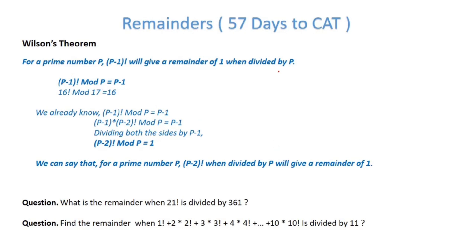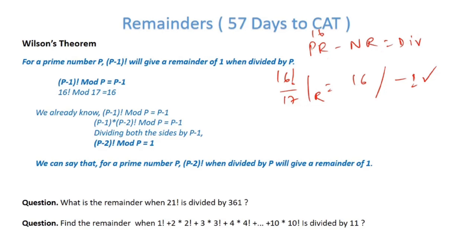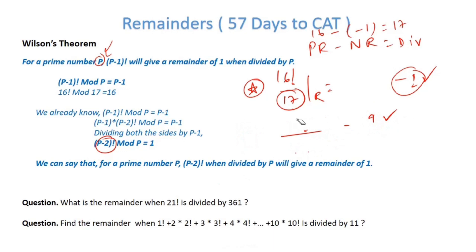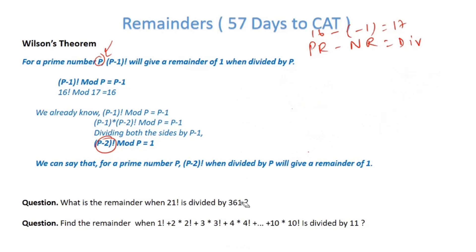Wilson's theorem states: (p − 1)! mod p, where p is prime, gives remainder p − 1, or equivalently −1 in negative remainder notation. For example, 16! ÷ 17 gives remainder 16, or −1 as a negative remainder. The second part of Wilson's theorem: (p − 2)! mod p gives remainder 1. So 15! ÷ 17 gives remainder 1.